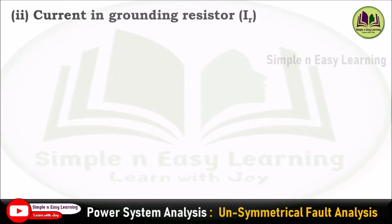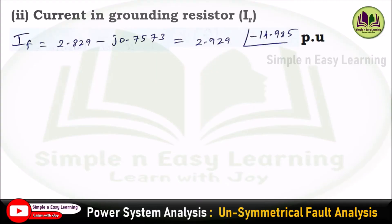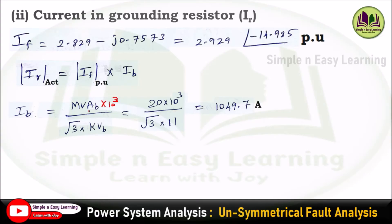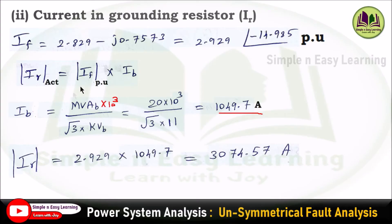Next, determine the current flowing through the grounding resistor IR. The fault current flows through the grounding resistor, so IR equals the fault current. The actual value of fault current = per unit value × base current. Base current = (MVAB × 10³) / (√3 × KVB) = (20 × 10³) / (√3 × 11) = 1049.7 ampere. Therefore, the actual current through the grounding resistor = 2.929 × 1049.7 = 3074.57 amps.